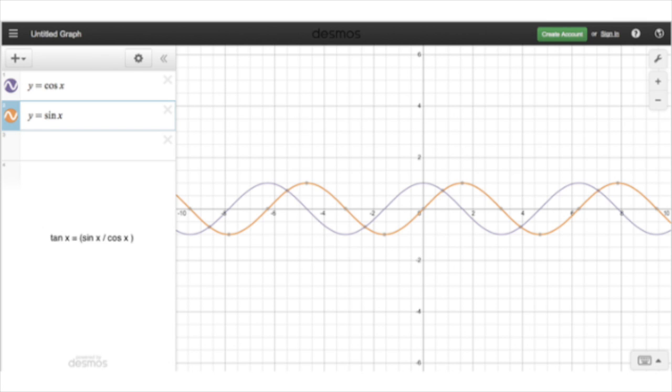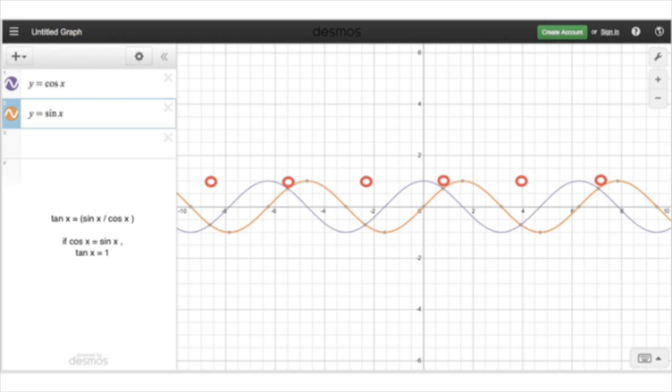Wherever the two graphs intersect, that means the value of sine and the value of cosine are equal. And if they're equal, when I divide them by each other, I'll get 1. Then you put that 1 on the up here. Where... Because the value of my function will be 1.